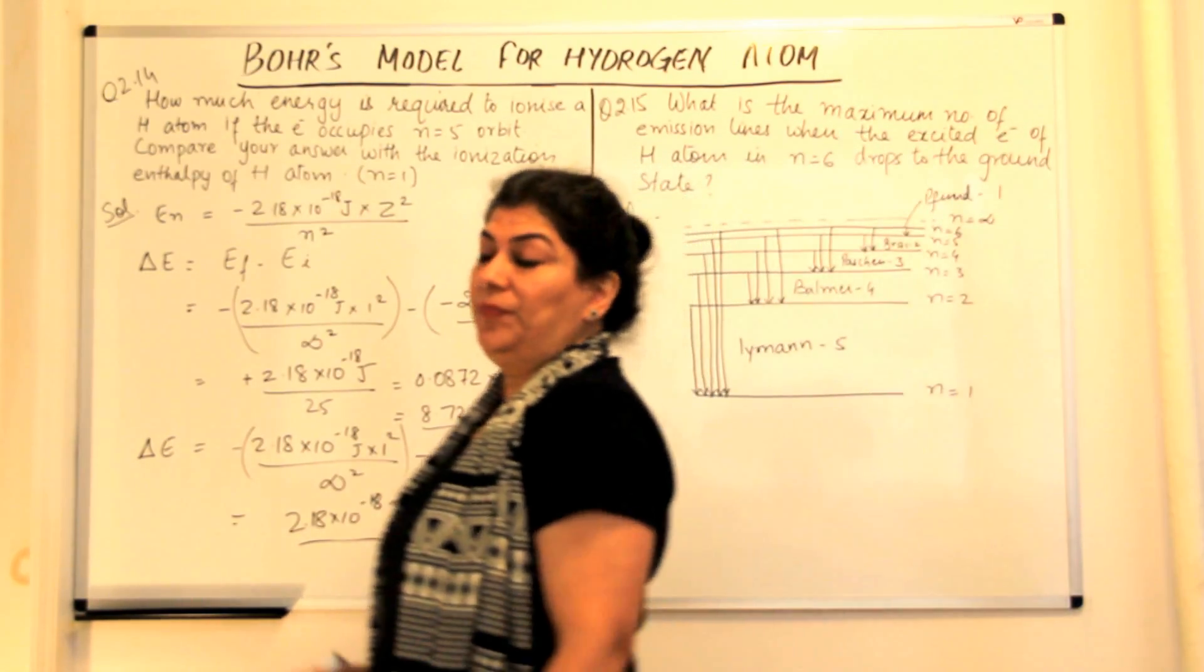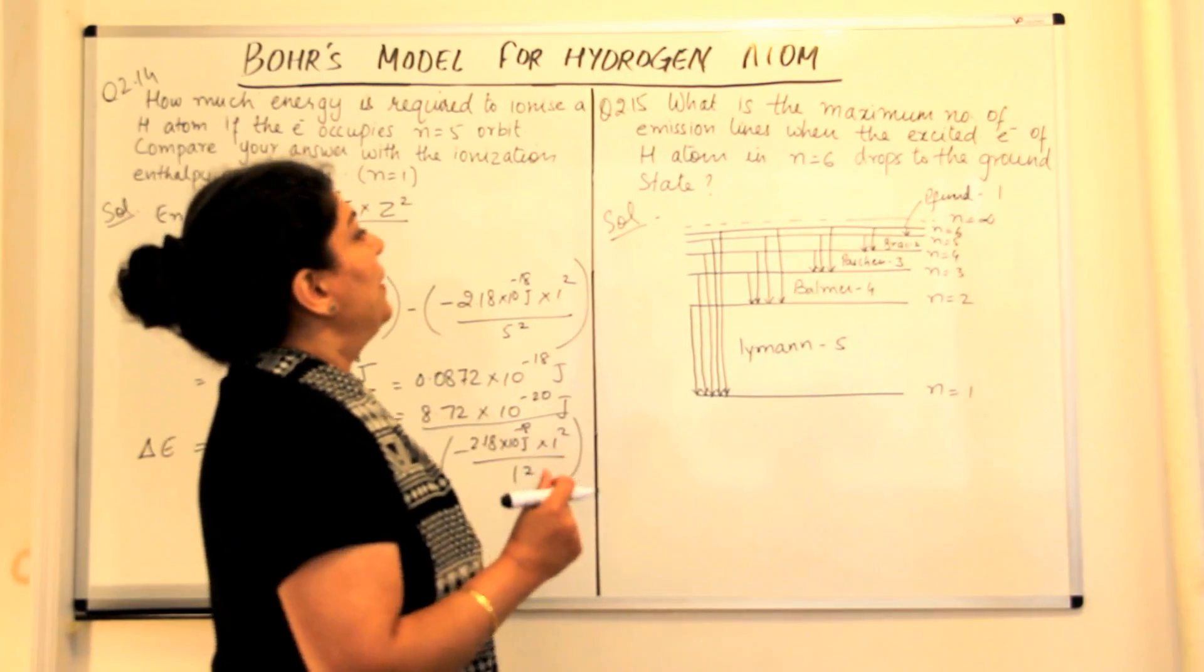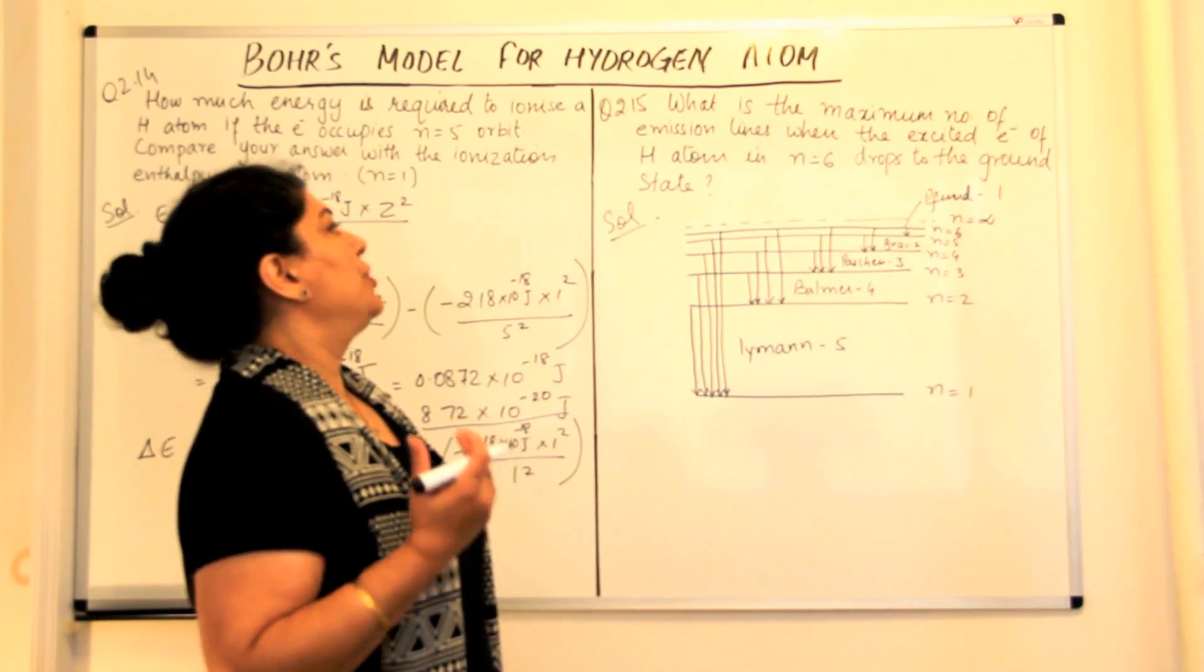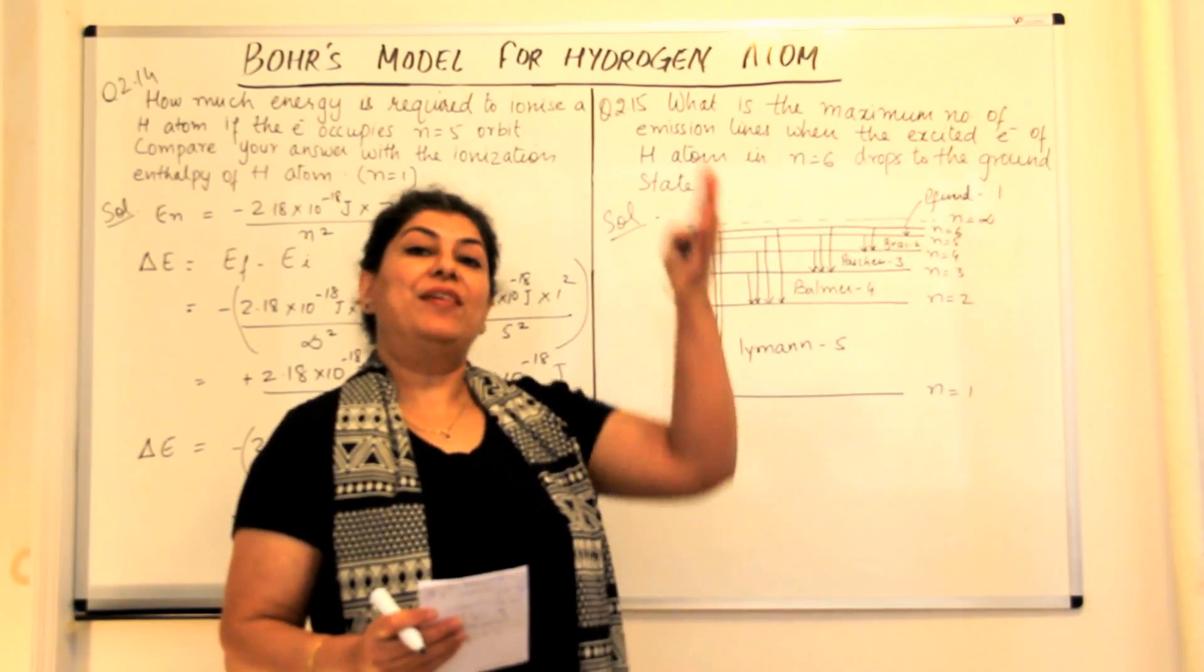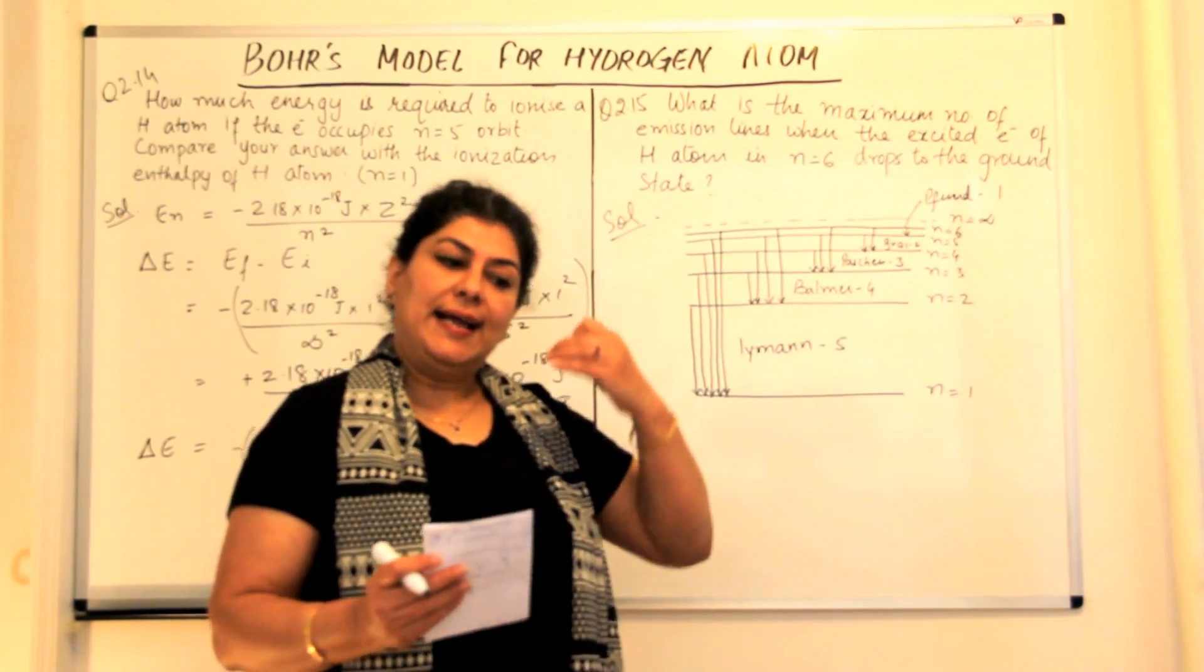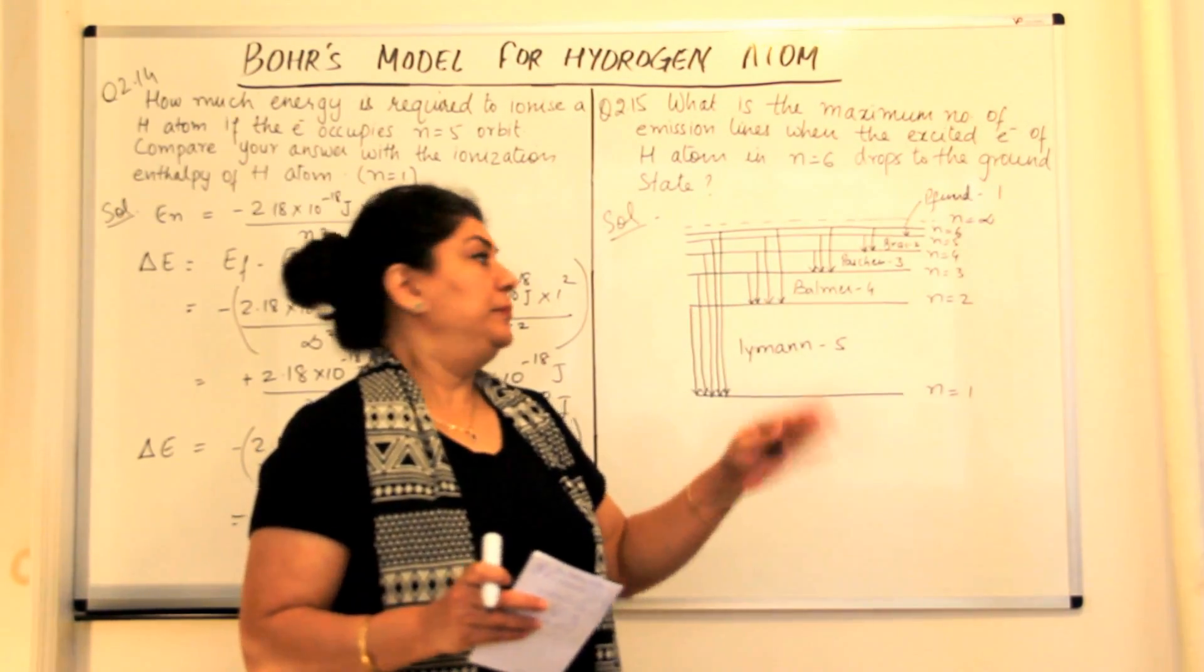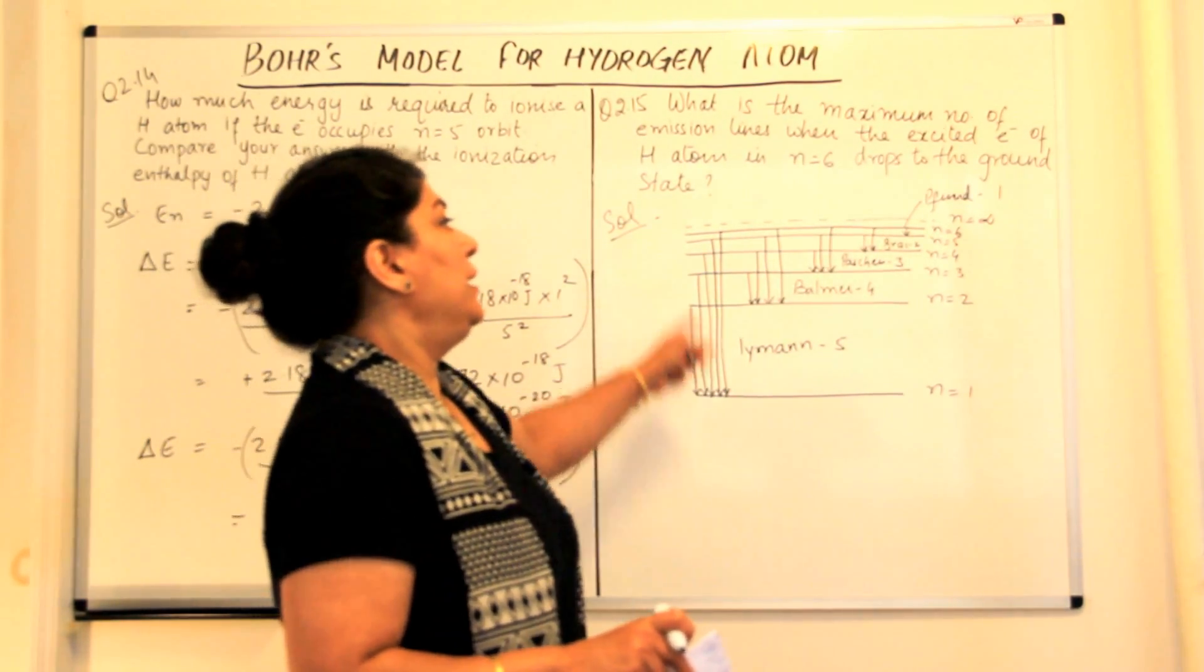Question 15 now is: what is the maximum number of emission lines when the excited electron of hydrogen atom at n equals 6 drops to the ground state? Emission spectrum is obtained when electrons gain energy and then jump back to the original level by radiating, giving out that energy, and this energy which is given out is then recorded, its spectrum on a recording plate or film, and the lines are to be counted.